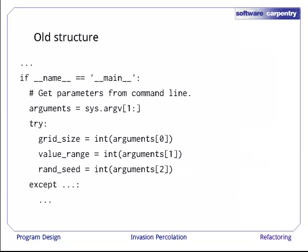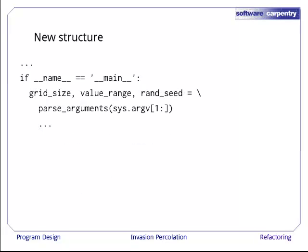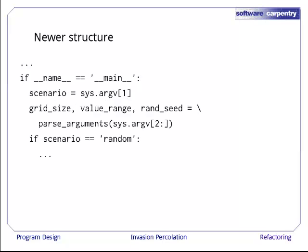Here's another part of the old program that we need to change. It takes command line arguments and converts them into integers in order to determine the grid size, the range of random values, and the random number seed. Our new structure is going to use a function called parseArguments to do the same job. We're also going to introduce a new argument in the first position called scenario. This doesn't need to be converted to an integer. It's just a string value specifying what we want to do.